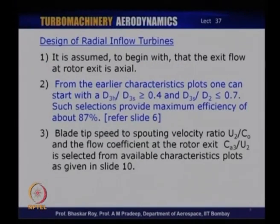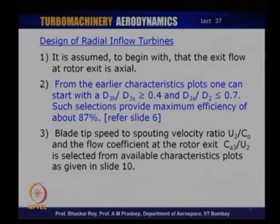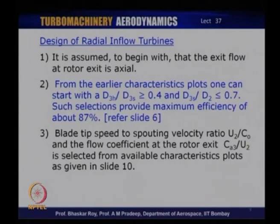The exit flow at the rotor is axial — that is an ideal design condition, so that the flow goes out without any swirl component. Any non-axial component of flow is going to be a wastage of energy, and that energy will not be diffused through the diffuser. The diffuser diffuses the axial component; it will not diffuse the tangential component, and as a result turbine performance would suffer through wastage of energy in swirl component.